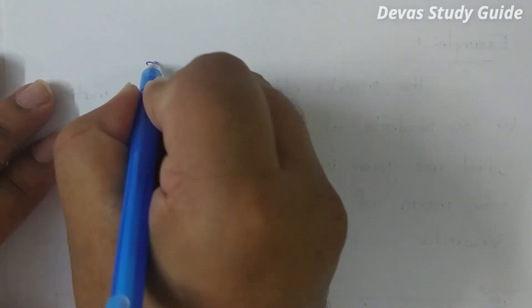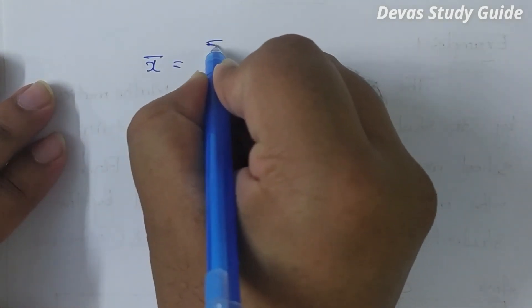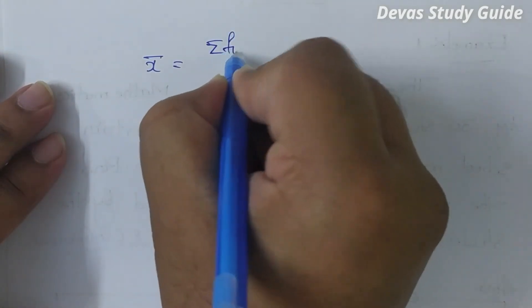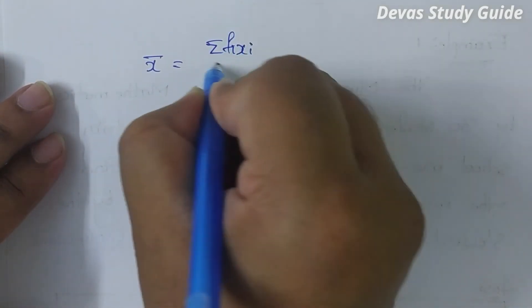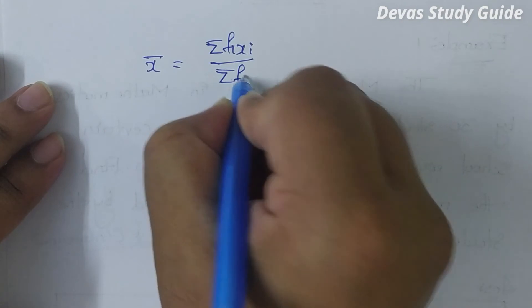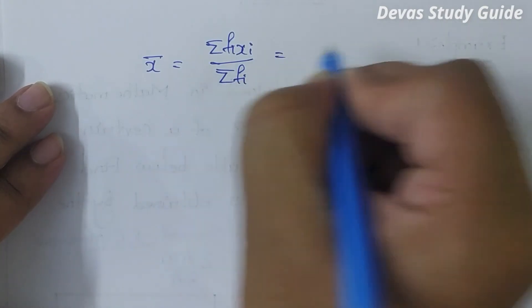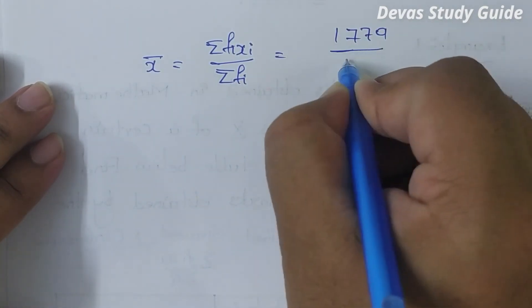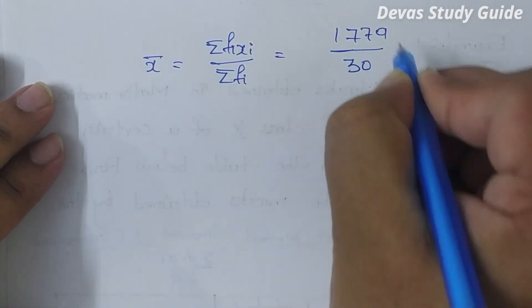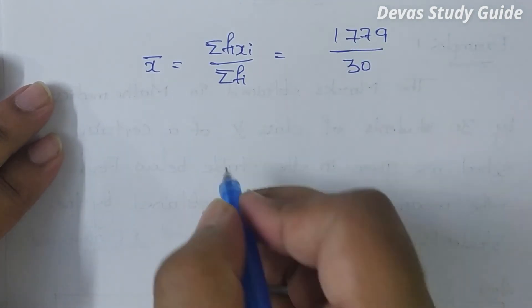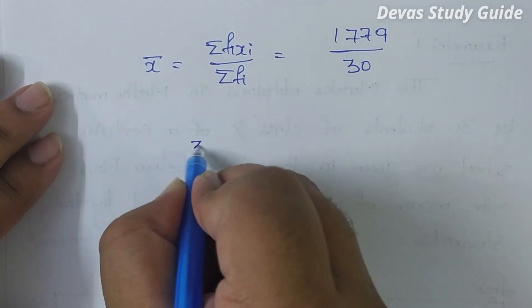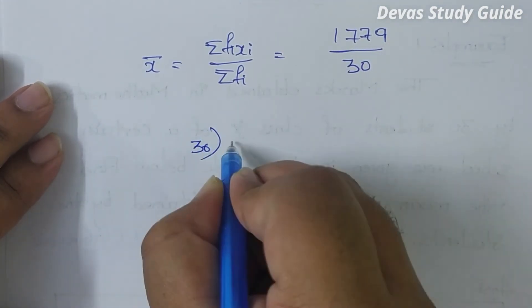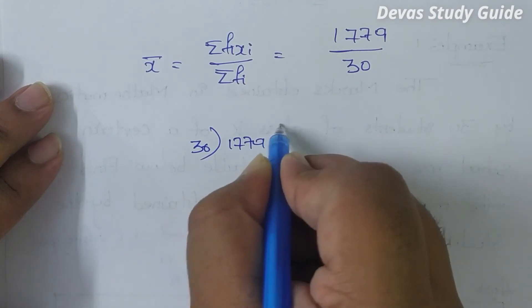Sigma fixi totals to 1279 and sigma fi equals 30. So applying the formula, x̄ = Σfixi / Σfi = 1279 / 30.